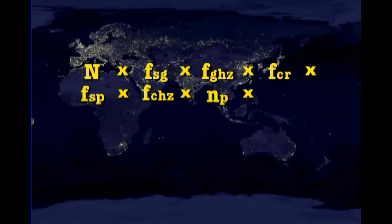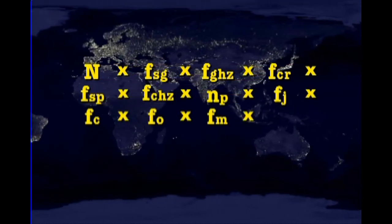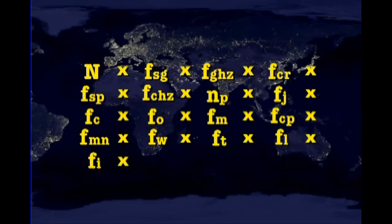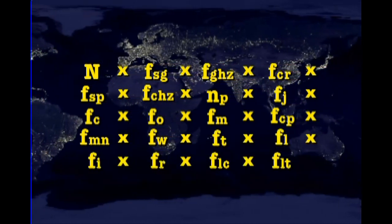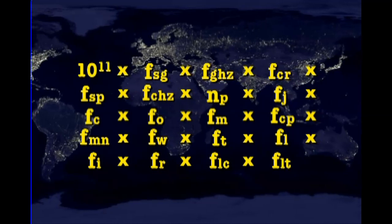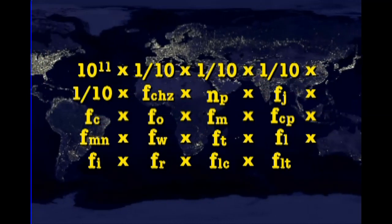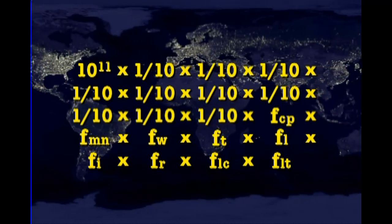In an attempt to estimate the probability of attaining this combination of factors simultaneously, some researchers have developed equations assigning a conservative one in ten value to each factor deemed necessary for advanced life.